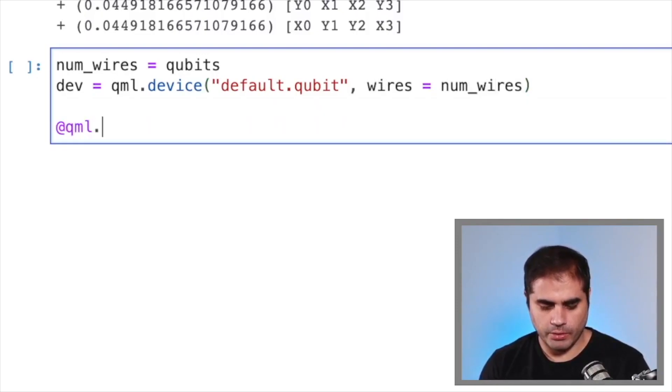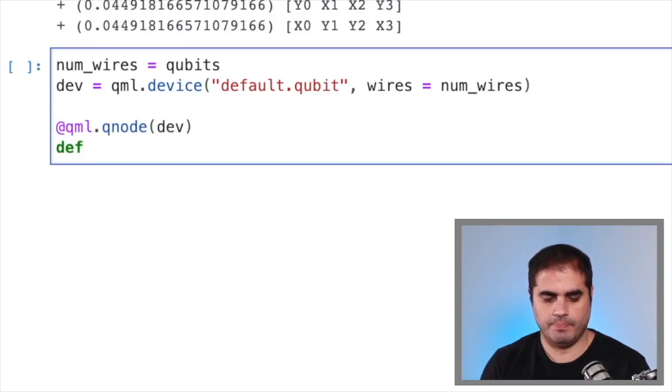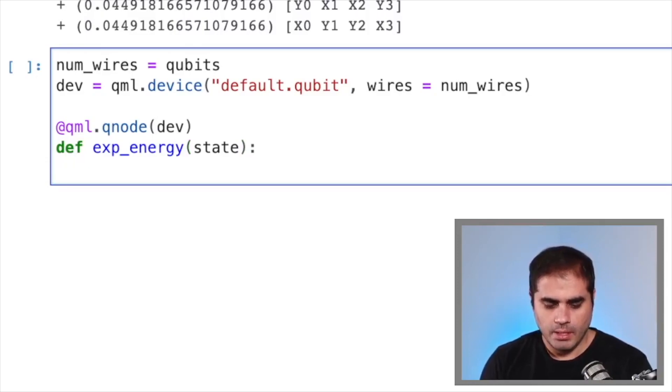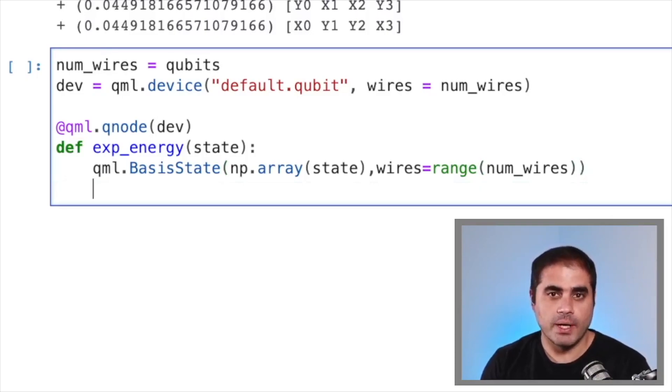Now we put our header, we build our Q node with this device. And let's define our circuit. Our circuit will be, let's call it, exp energy or expectation value of the energy. And it will take as input a state, which will be represented in the Jordan-Wigner representation as a Python array. Now we need to prepare this state. So we do this through the function QML dot basis state. And then we put NP array. This function takes an NP array. So let's just make sure that we are transforming whatever array we put in, into an NP array. And this will act on all the wires. So wires is equal to range, numwires. And we are going to return the expectation value of the energy. That is the expectation value of the Hamiltonian. So we need to return a QML x val of h.